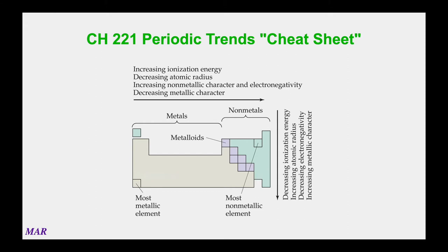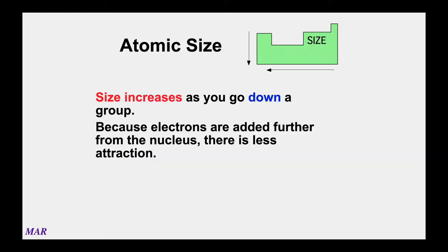There are lots of different periodic trends you can think about, but we're going to focus on sizes of atoms, ionization energy, and electron affinity. Electronegativity is something we'll use a lot starting in Chem 222, so just note that for later. We could also talk about which elements are most metallic or non-metallic, but let's focus on what's important for Chem 221.